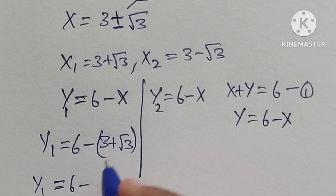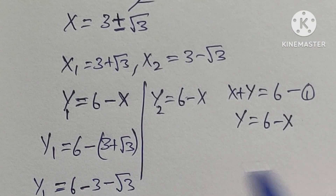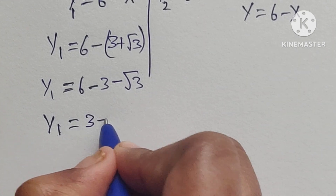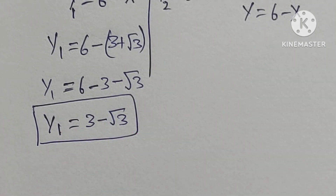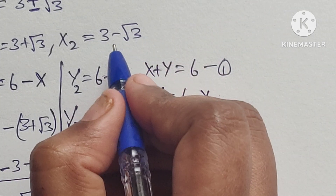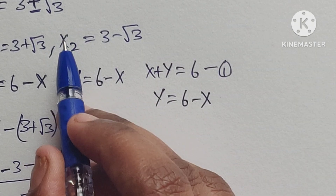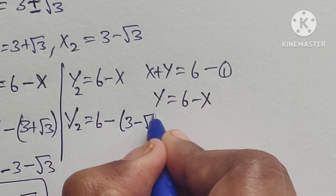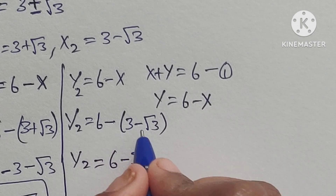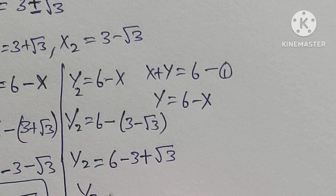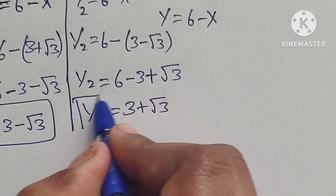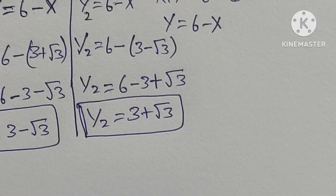So y1 equals 6 minus (3 plus square root of 3), which gives y1 equals 3 minus square root of 3. For y2, we substitute x2 equals 3 minus square root of 3, so y2 equals 6 minus (3 minus square root of 3), giving y2 equals 3 plus square root of 3.